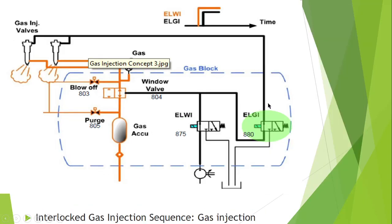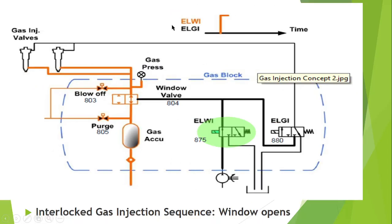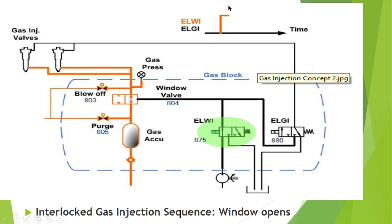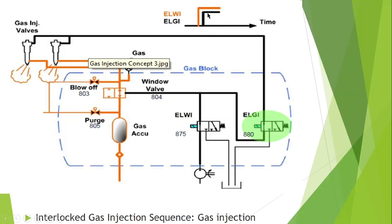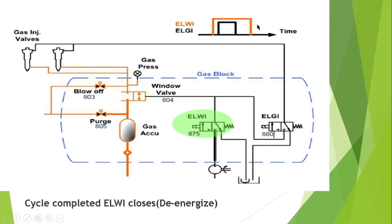Then the ELGI gets activated electronically. The hydraulic oil that was waiting gets a passage and activates the gas injection valve — combustion process is complete. After that, the ELGI gets deactivated first, followed by the ELWI getting deactivated. So looking at the top diagram: nothing happening, then ELWI activates, then ELGI activates, then ELGI deactivates, then ELWI deactivates. This is the complete sequence of the gas injection — the complete cycle of the sequence of operation of a gas injection engine.